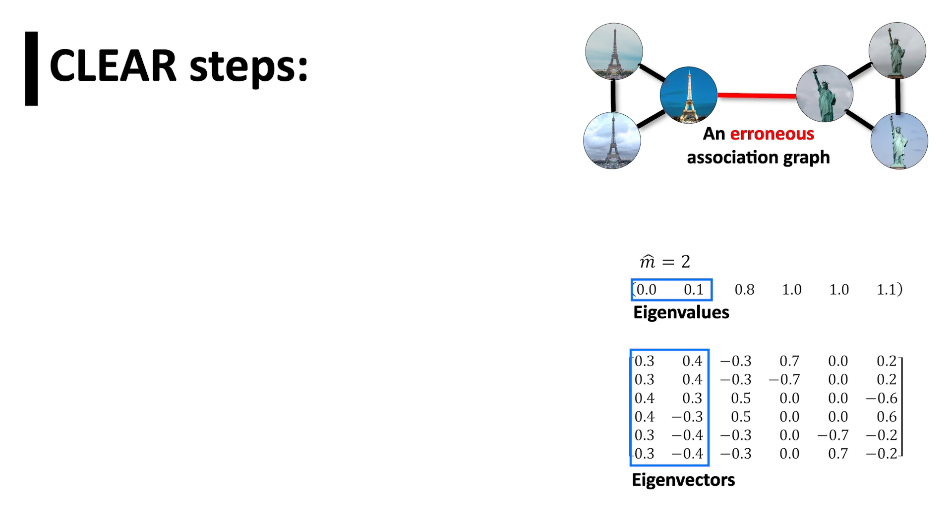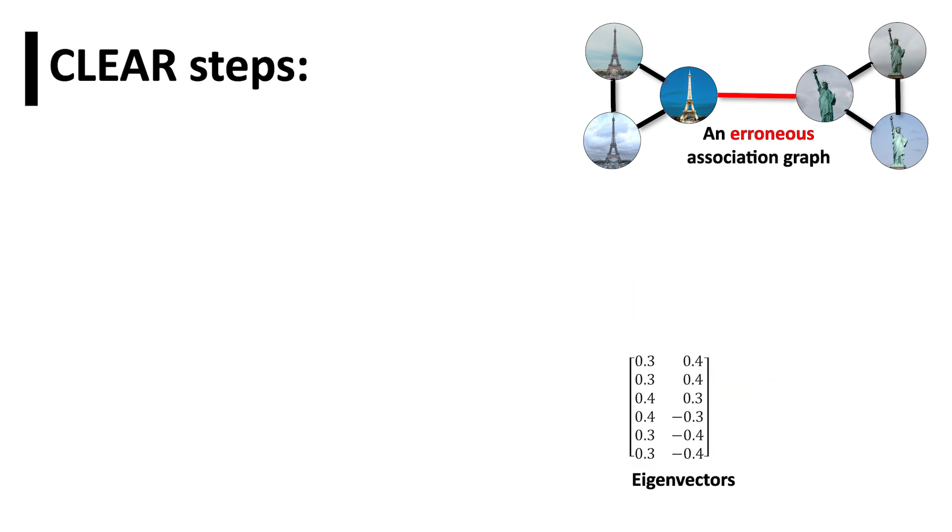CLEAR then chooses m-hat eigenvectors that correspond to the smallest eigenvalues. Rows of chosen eigenvectors are normalized and embedded as points in the space.